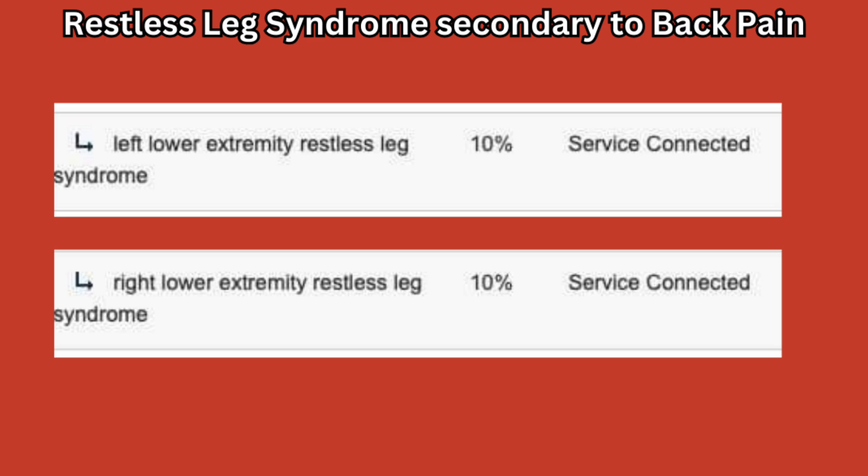Moving on — restless leg syndrome, secondary to back pain. This veteran has 10% per leg. You can have multiple secondary disabilities. This veteran happened to have restless leg syndrome in both the left and right extremity at 10% each. This veteran also has radiculopathy, which would be two additional 10% ratings. You can have 20% per leg for sciatica and 10% per leg for restless leg syndrome.